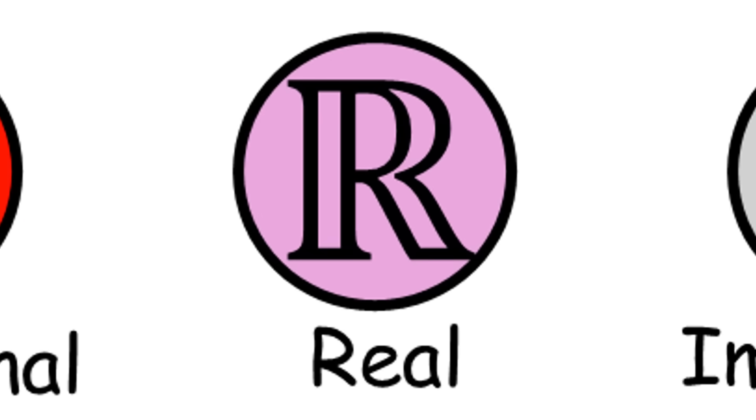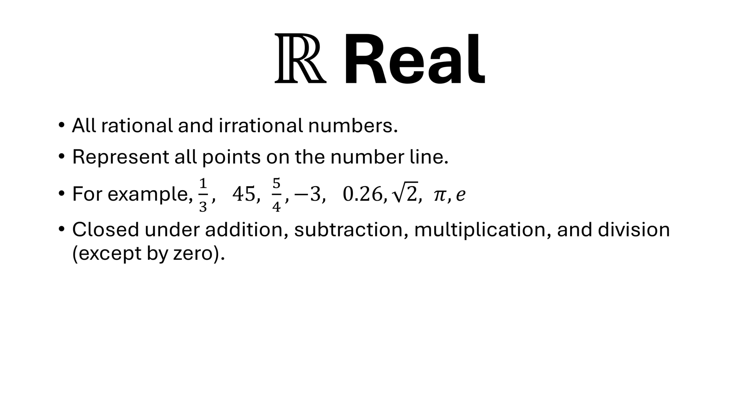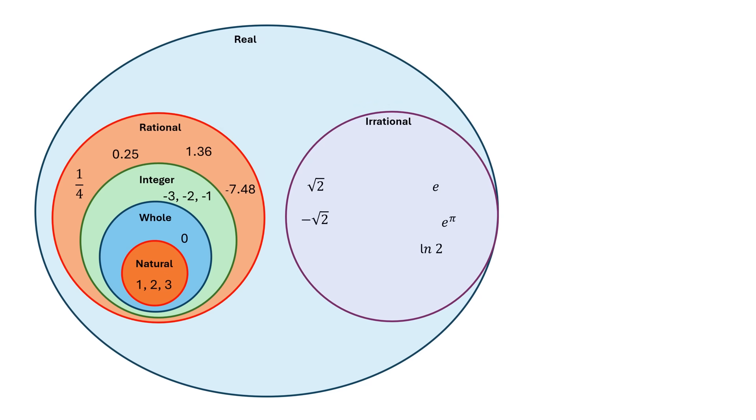All the rational and irrational numbers put together. They represent all points on the number line. For example, 1/3, 45, 5/4, -3, 0.26, square root 2, pi, and E. They are closed under addition, subtraction, multiplication, and division, except by 0.